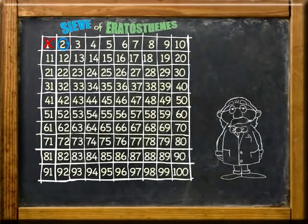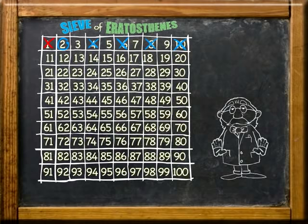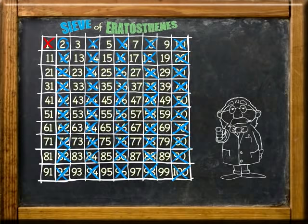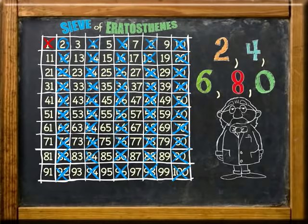For example, 2, 4, 6, 8, 10, and so on. They all end in 2, 4, 6, 8, or 0. So if a number ends in 2, 4, 6, 8, or 0, then one of its factors is 2.